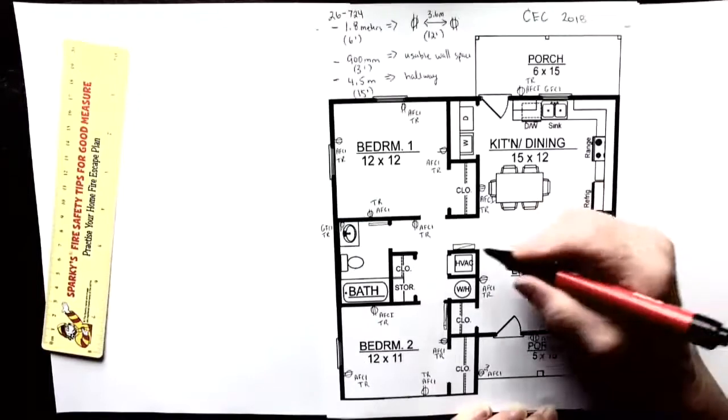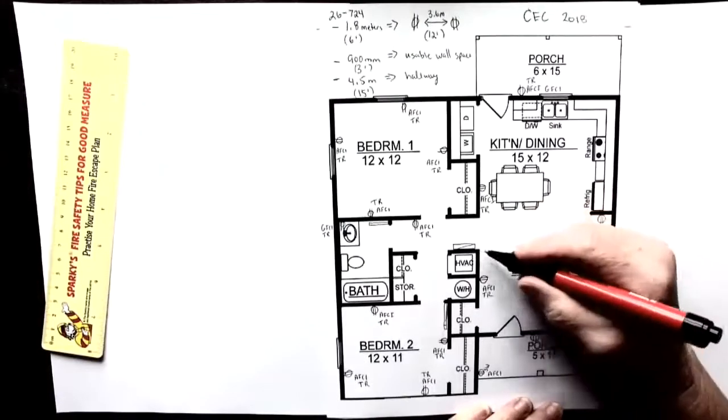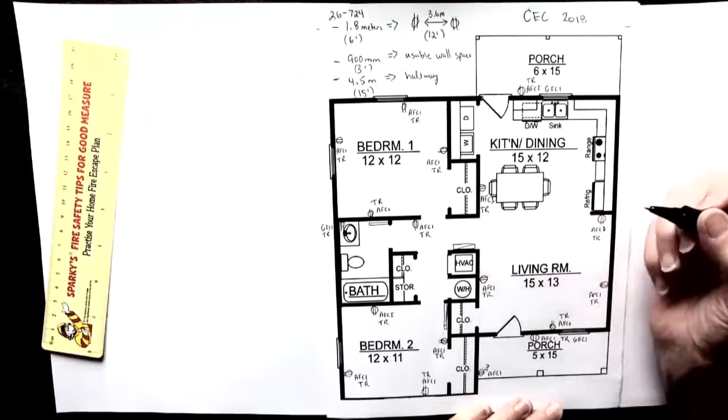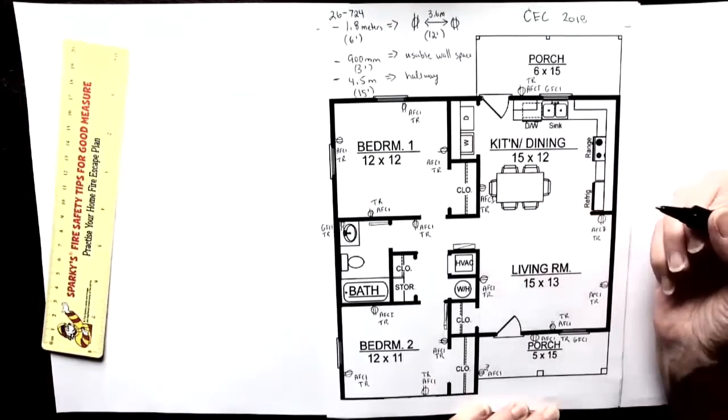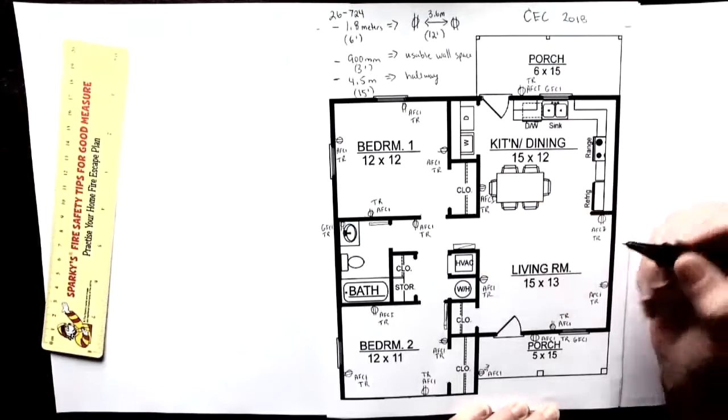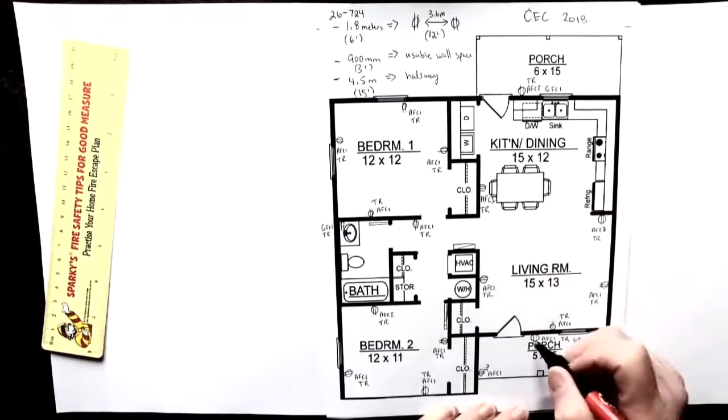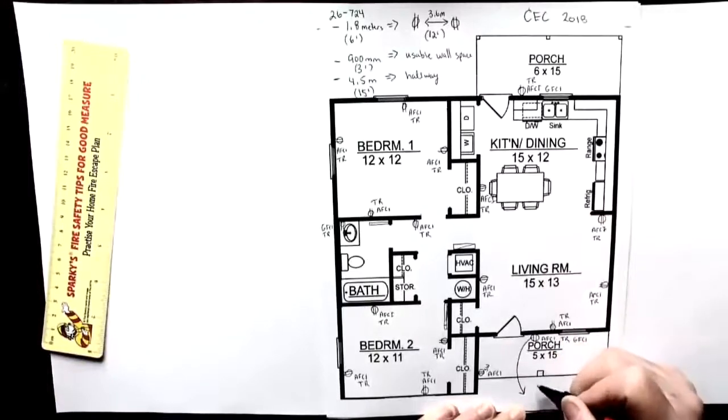Now normally your home runs would all focus out from that electrical panel. But when you're actually laying out the prints, we don't draw the line all the way back to the panel. What we do is show an arrow. And that dictates or indicates that we're taking that back to the panel.